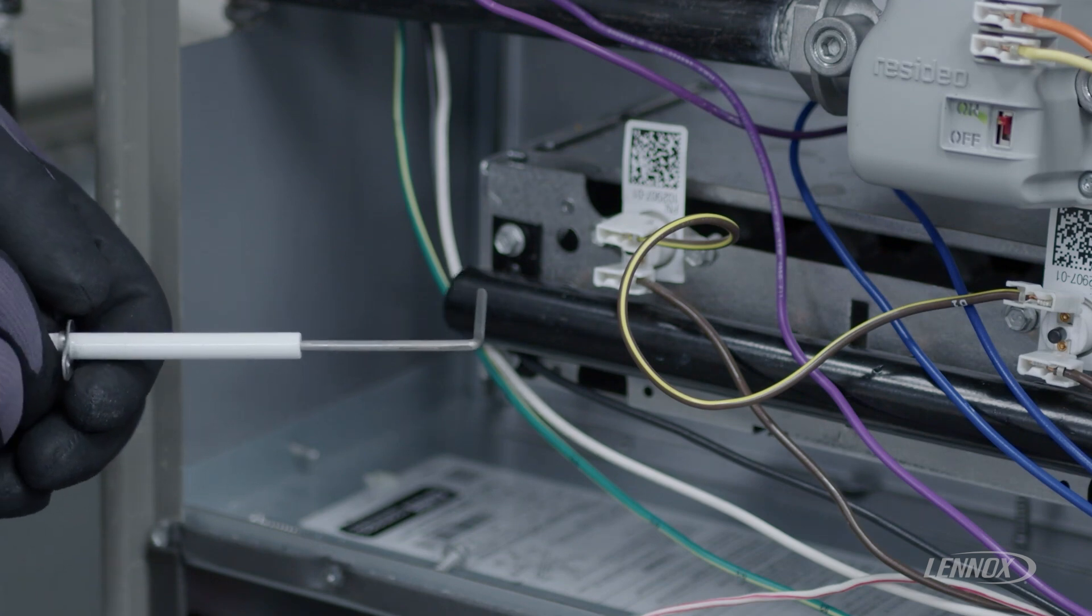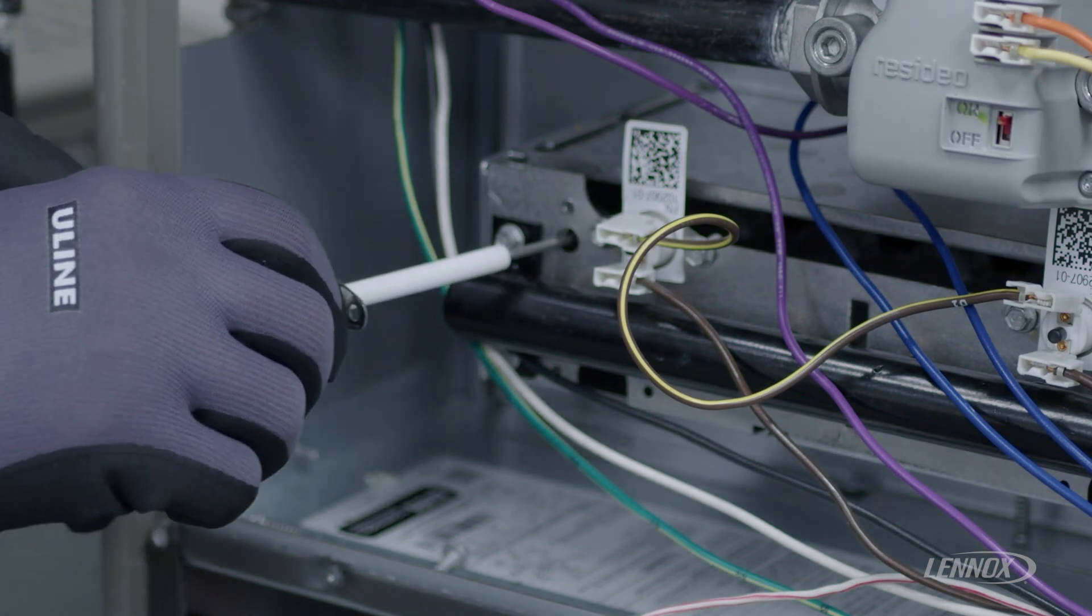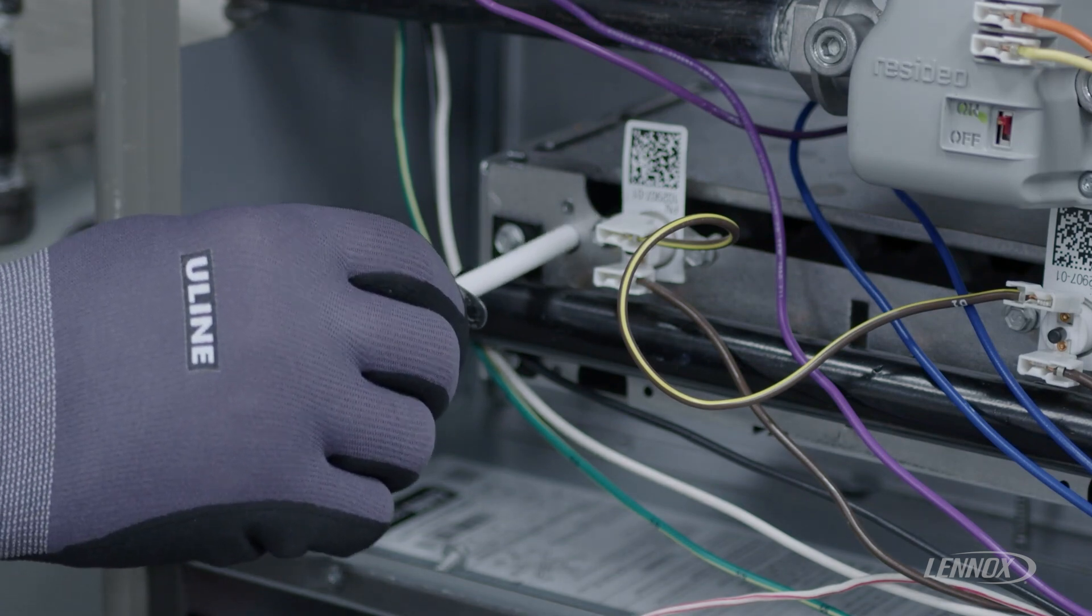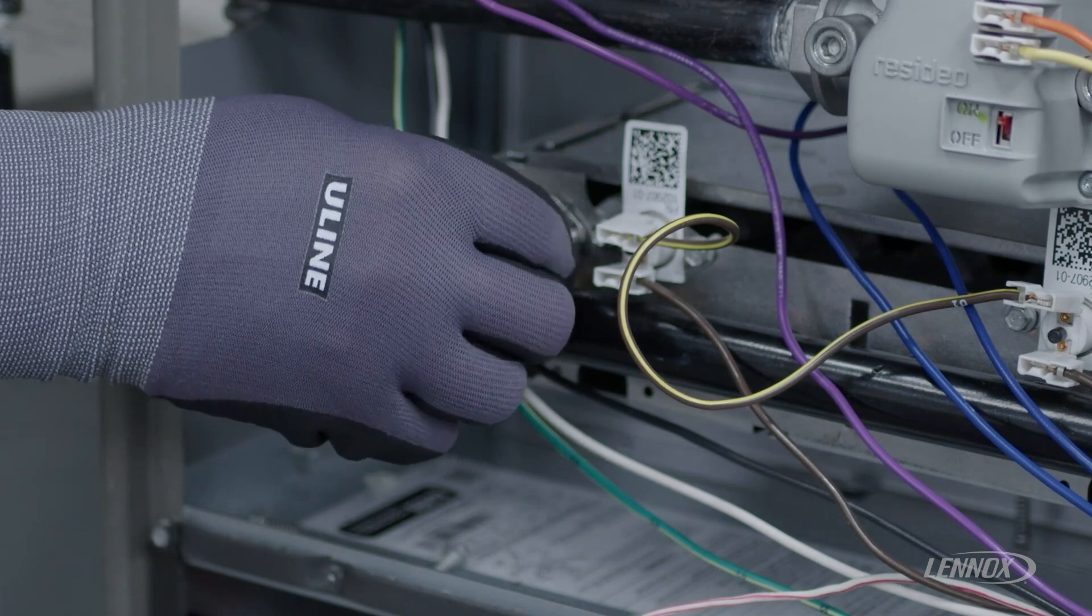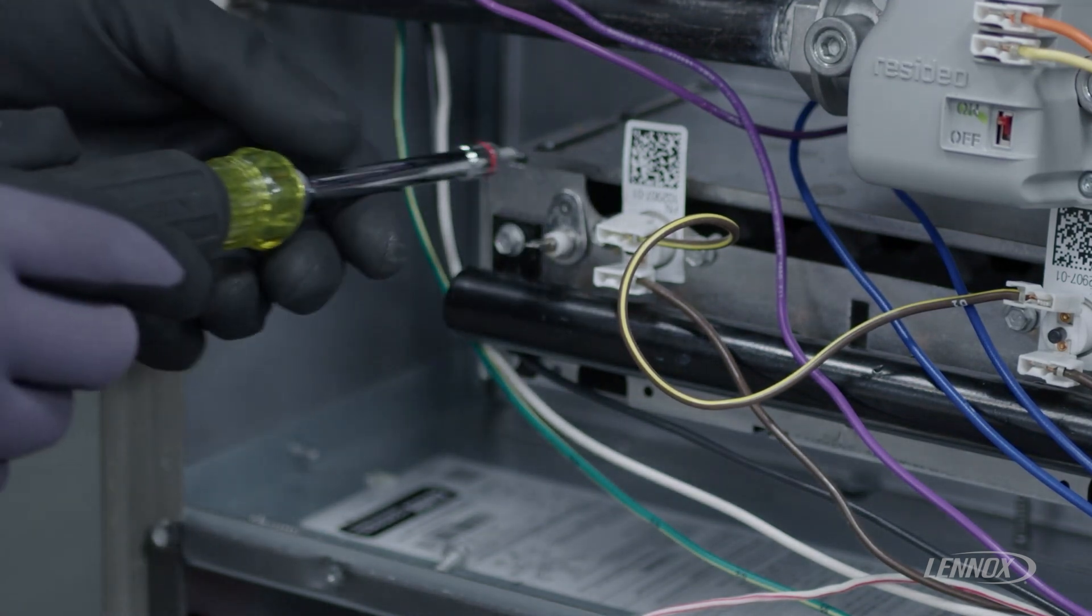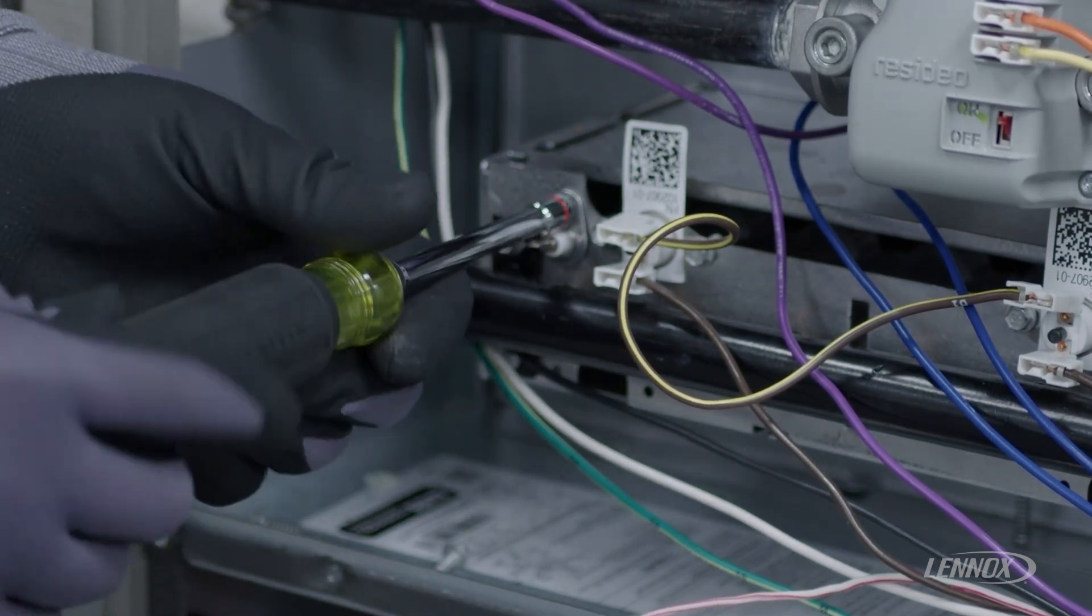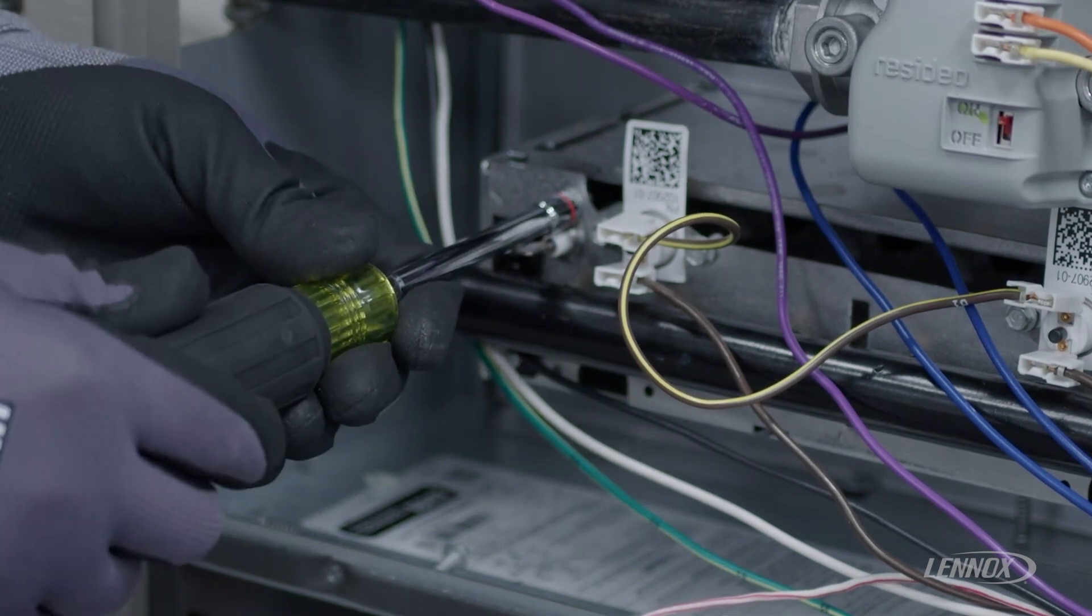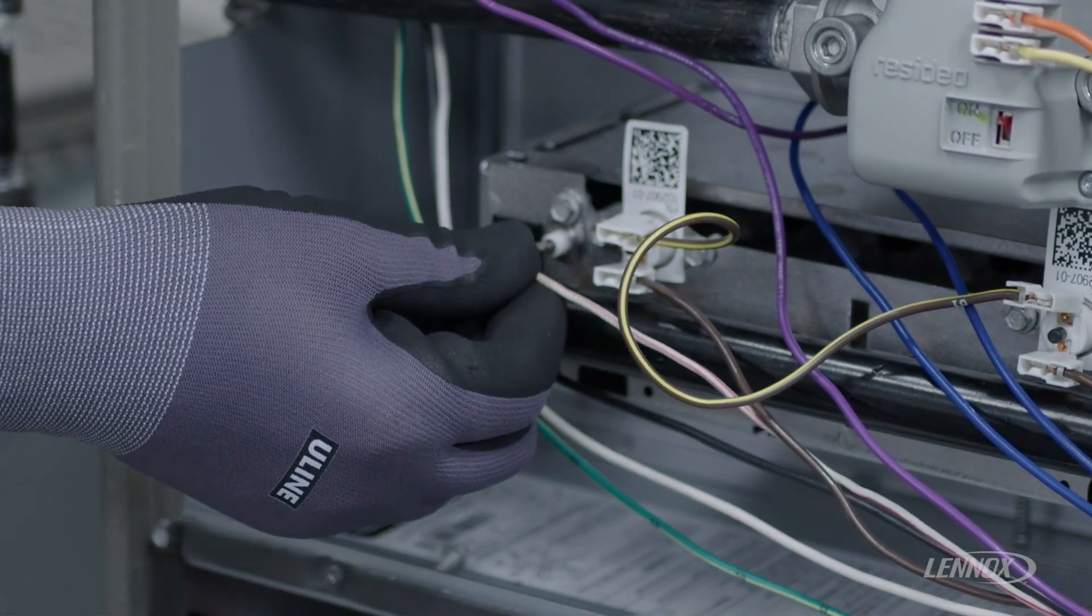You're just going to reverse the path that you took to remove it. Following the bend, carefully insert it back into the hole, slide it into position, lining up your quarter inch hole, reinserting the quarter inch screw with your nut driver, placing your flame sensor lead back on the spade connection.